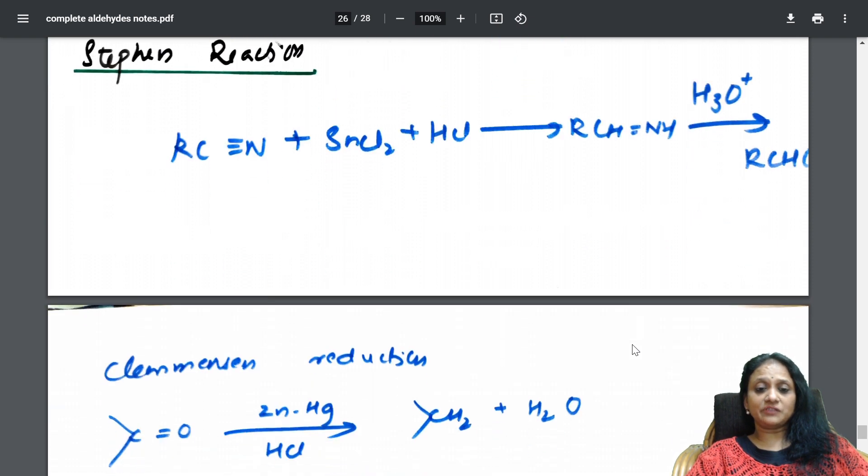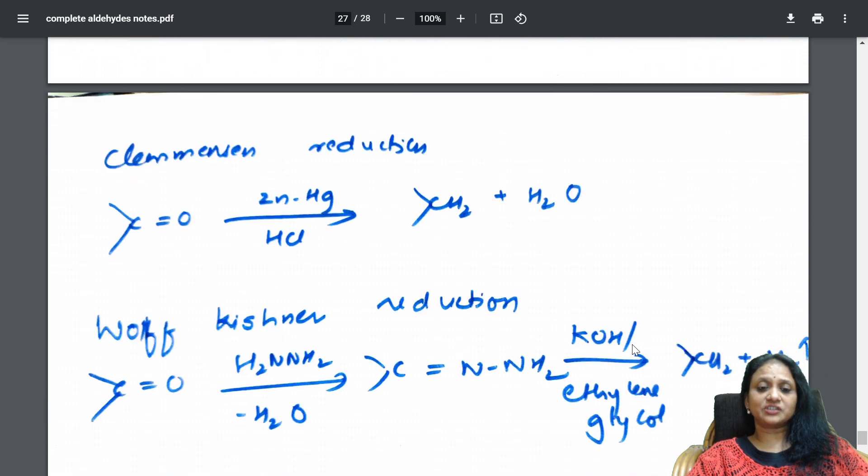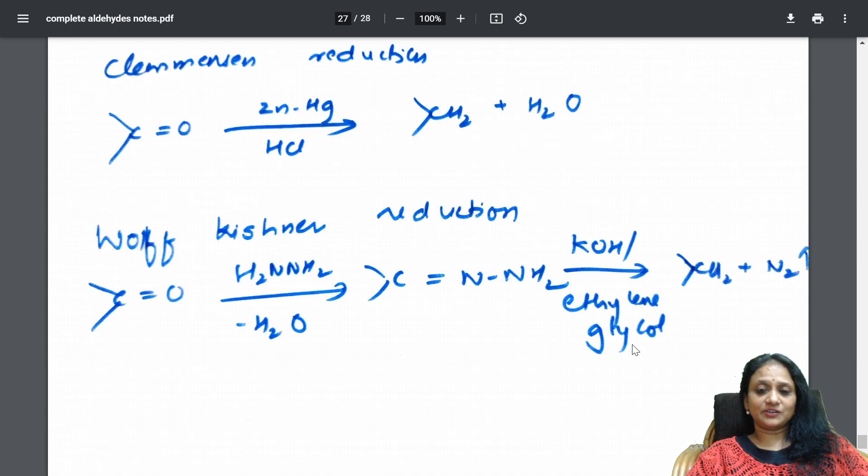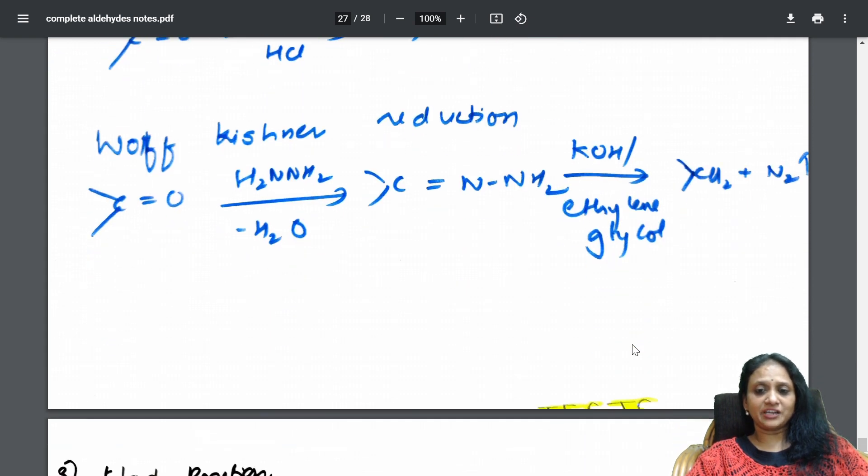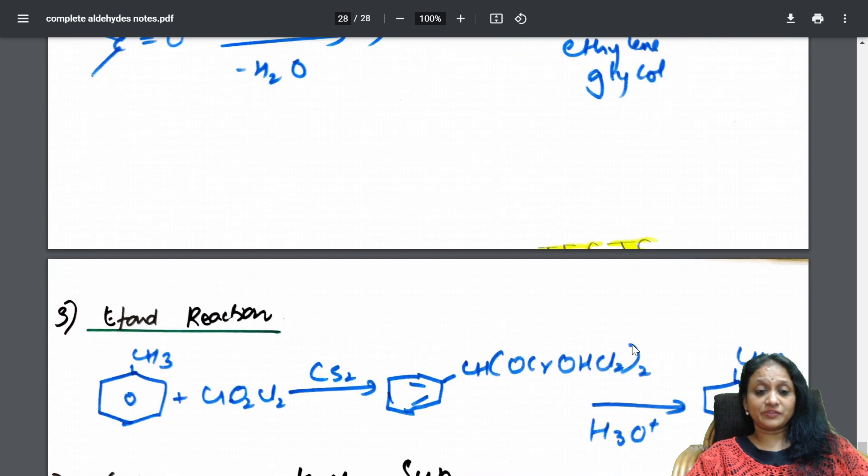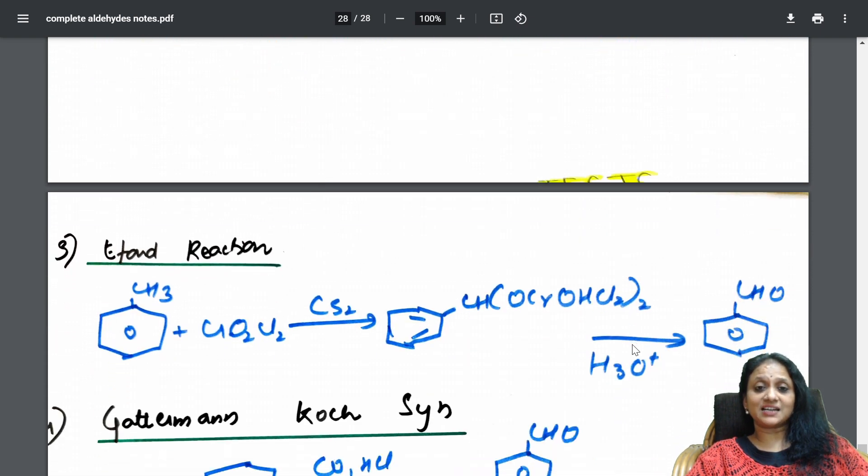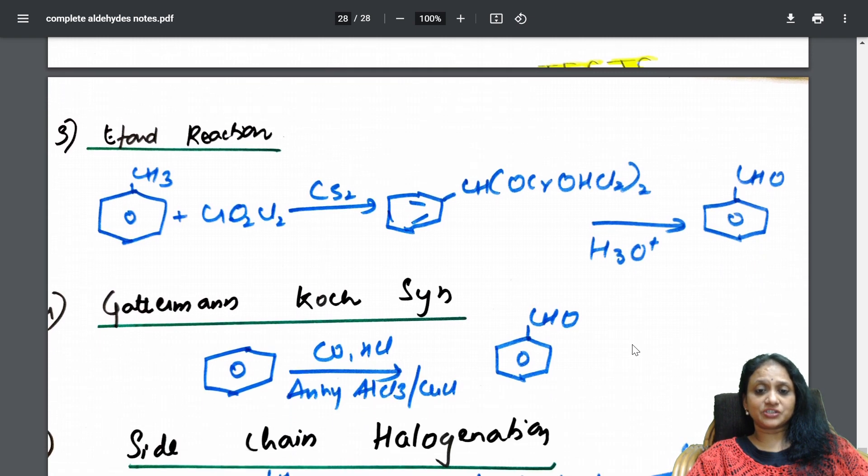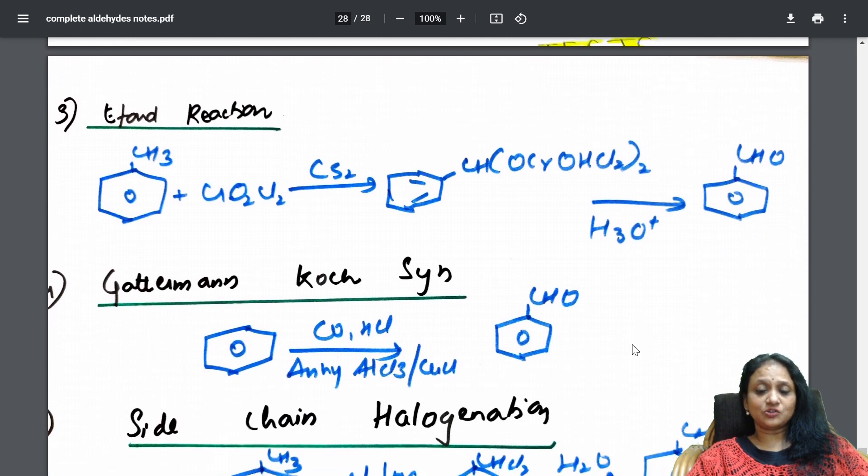slowly when I go Clemmensen's reduction here, Wolff-Kishner reduction here, right? And slowly when I come, finally, Etard reaction important where you are converting toluene to benzaldehyde. Slowly I have taken it to Gattermann-Koch reaction and side chain halogenation.